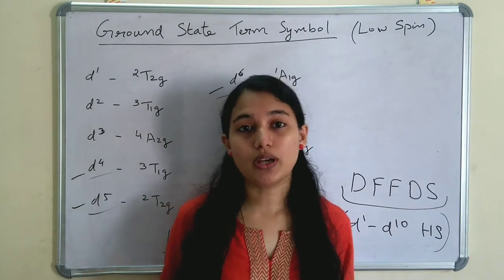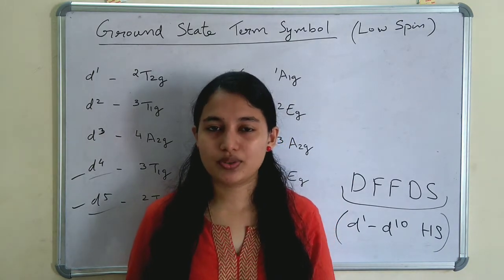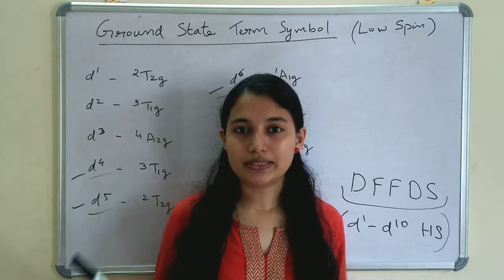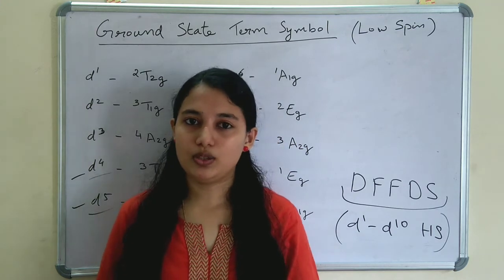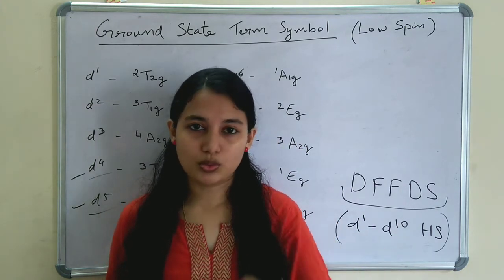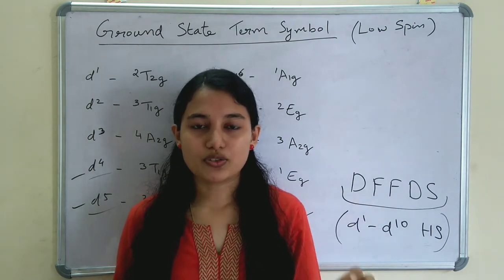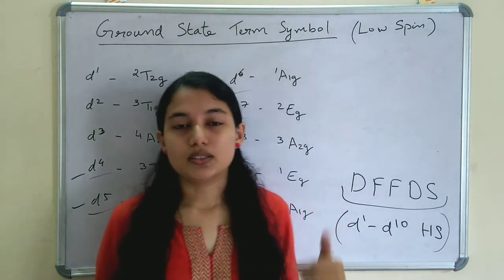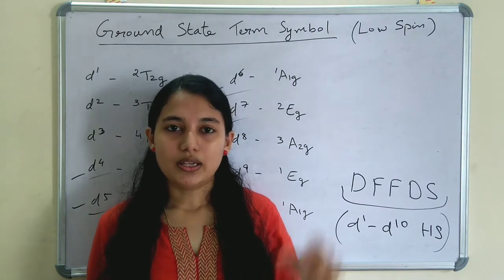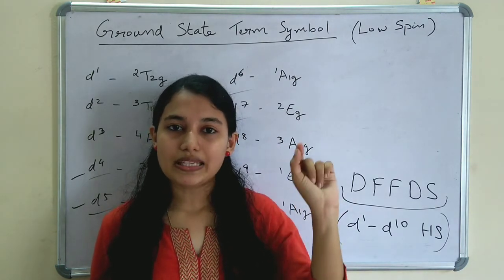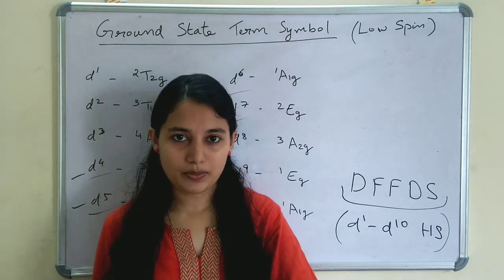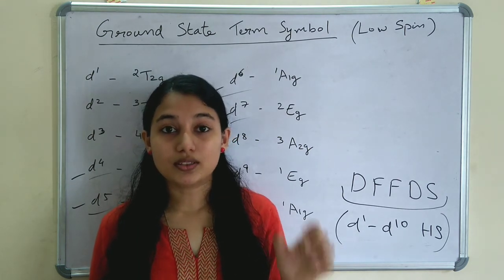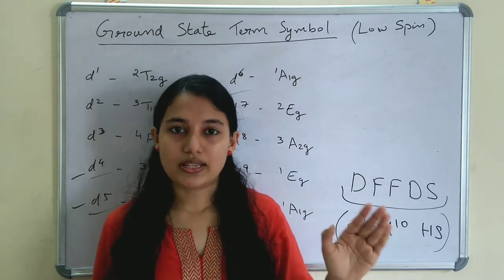The Tanabe-Sugano diagram can explain both high spin and low spin electronic transitions in octahedral and tetrahedral complexes. It can predict the band positions, electronic transitions, the ΔO (10Dq) value, and CFSE value. Another important point is the non-crossing rule — same symmetry or same spin multiplicity terms do not cross each other. Unlike the orbital diagram, in the TS diagram the ground state energy level is taken as the constant reference, set to zero.